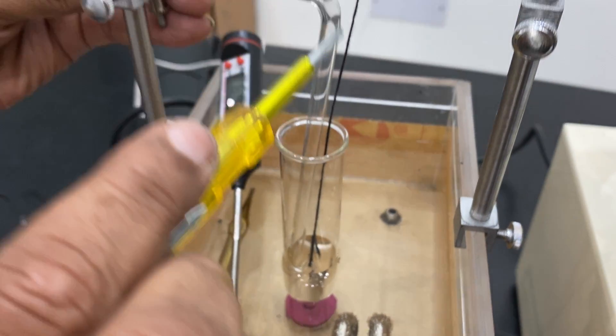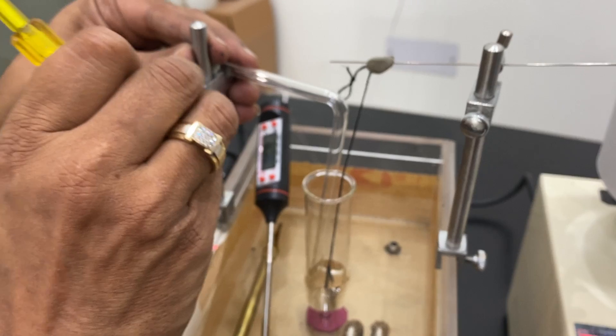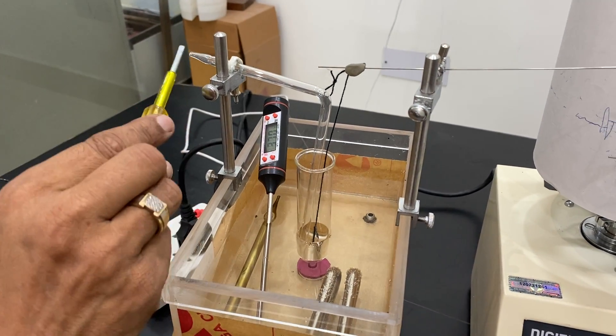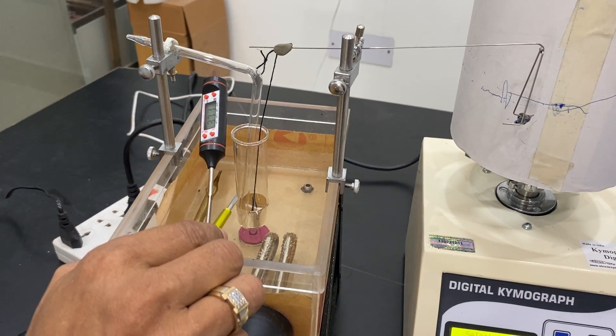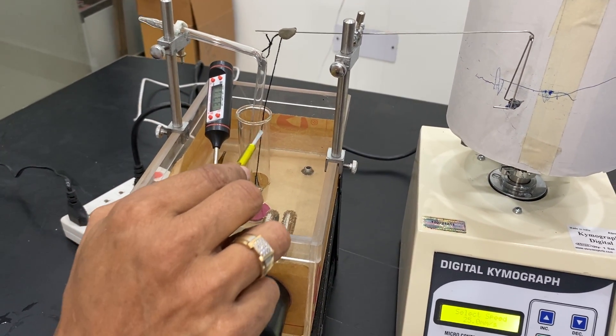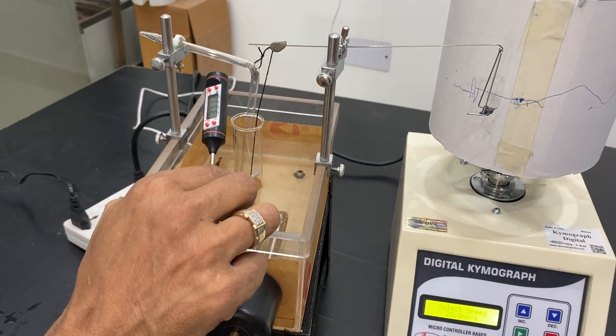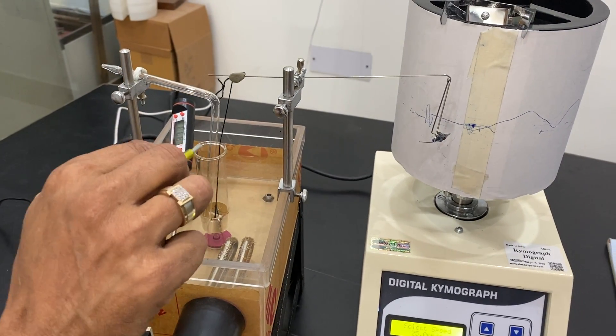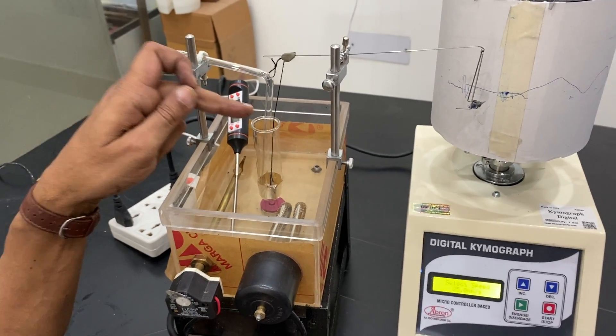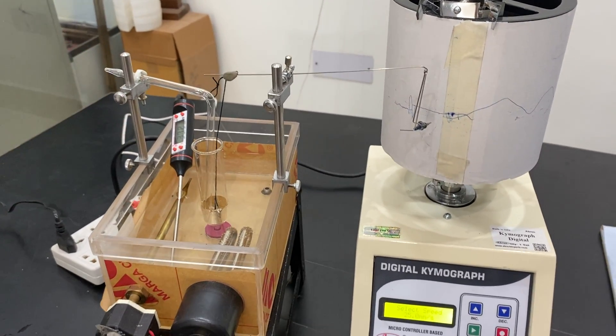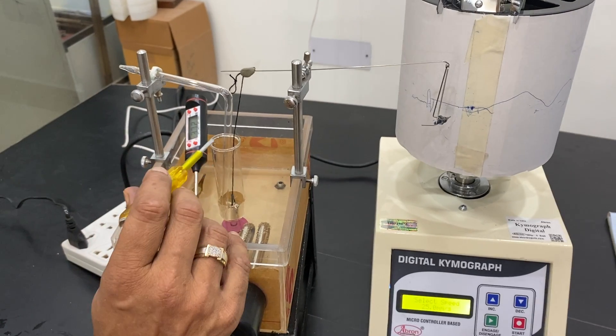This is an aeration tube. The oxygen can go from here to the solution, and here we connect the oxygen cylinder so that some drops of oxygen go so that the muscle is always alive. Chemical solution for keeping the muscle alive is put in this, and then we use the dropper or syringe to put one drop of any medicine for testing the effect on the muscle.